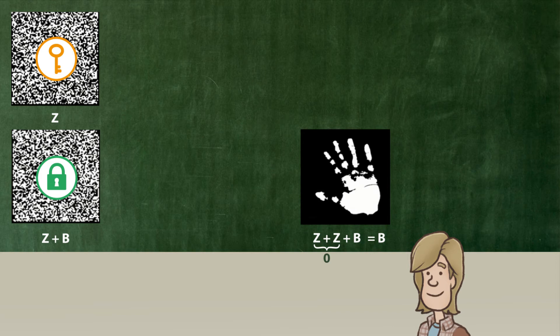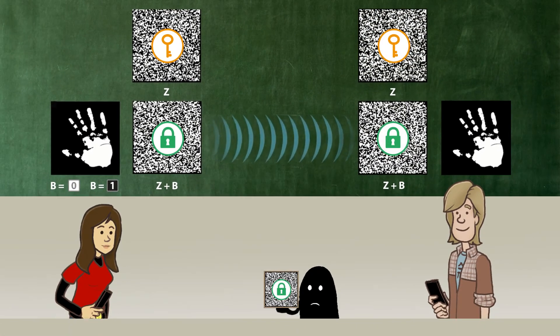Secure data transmission is therefore possible if Alice and Bob share a secret random pattern z, the so-called one-time pad.